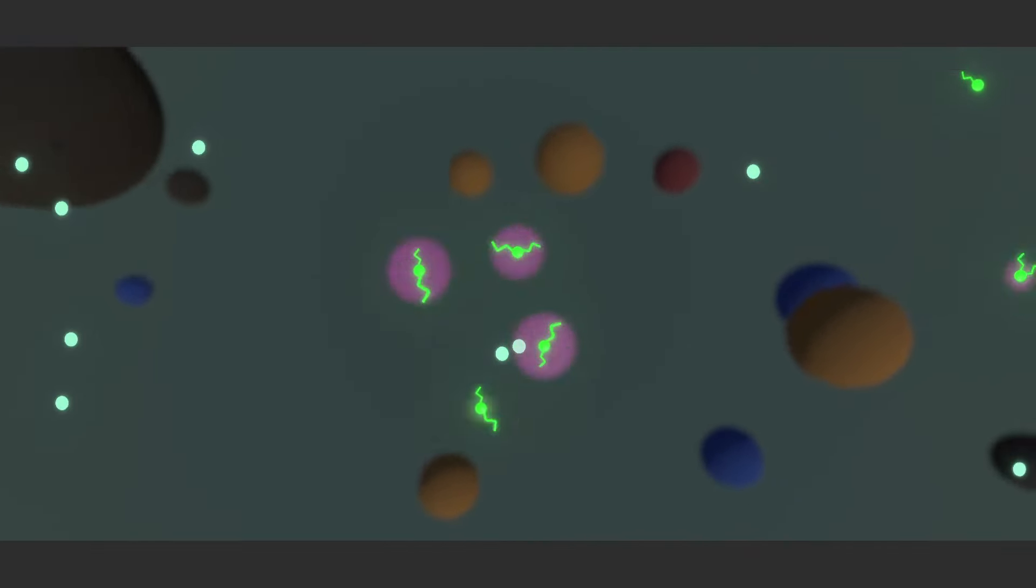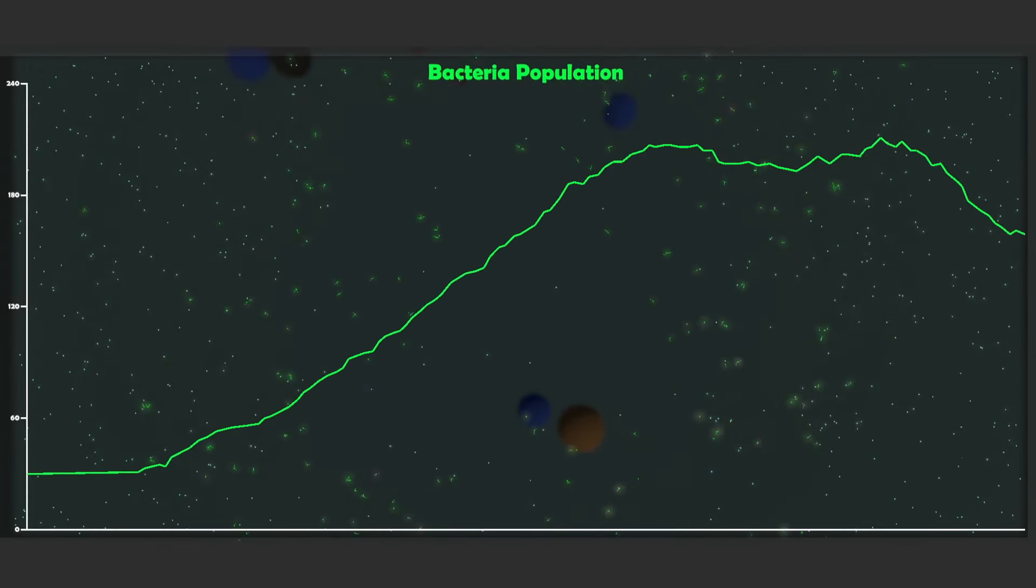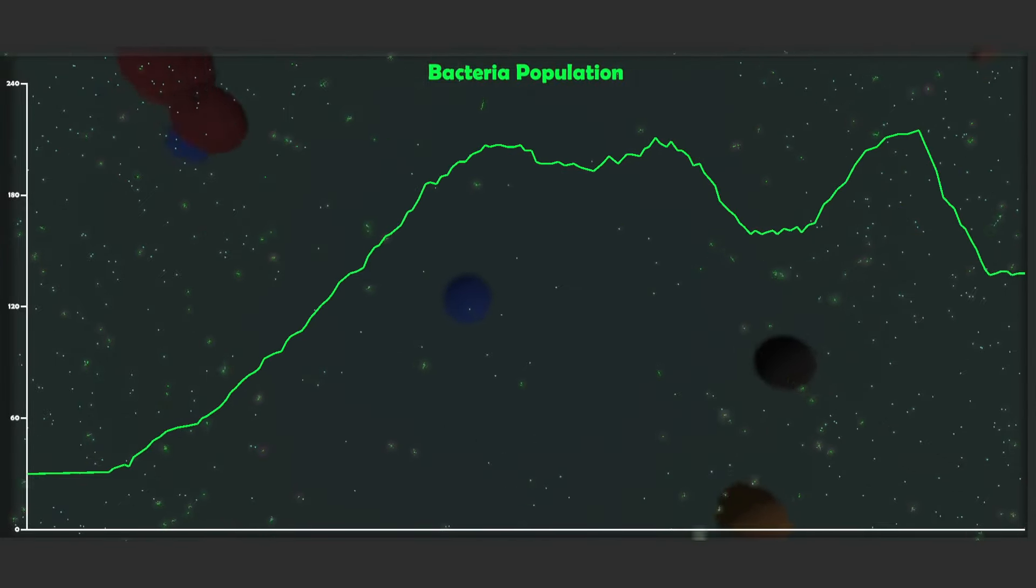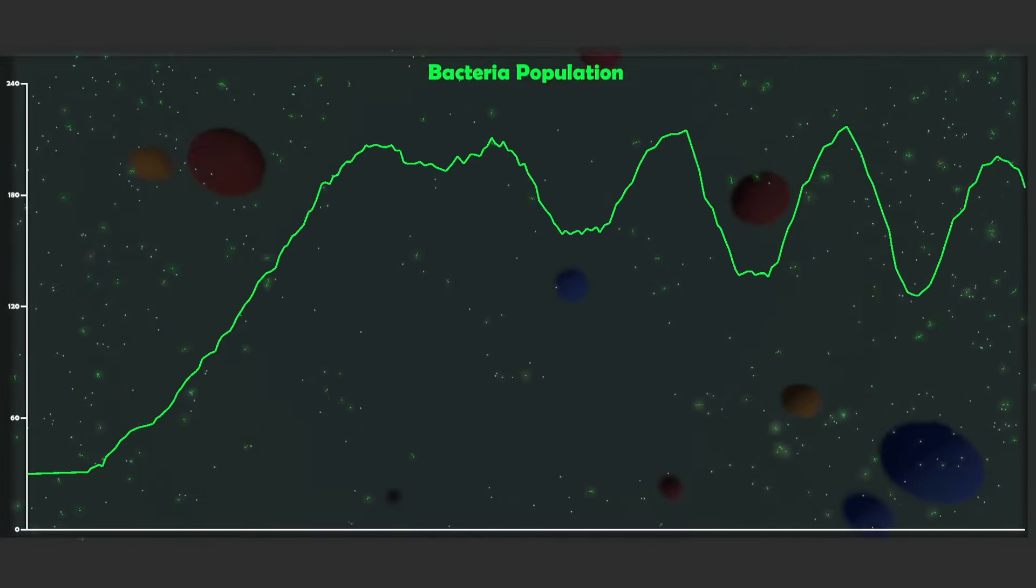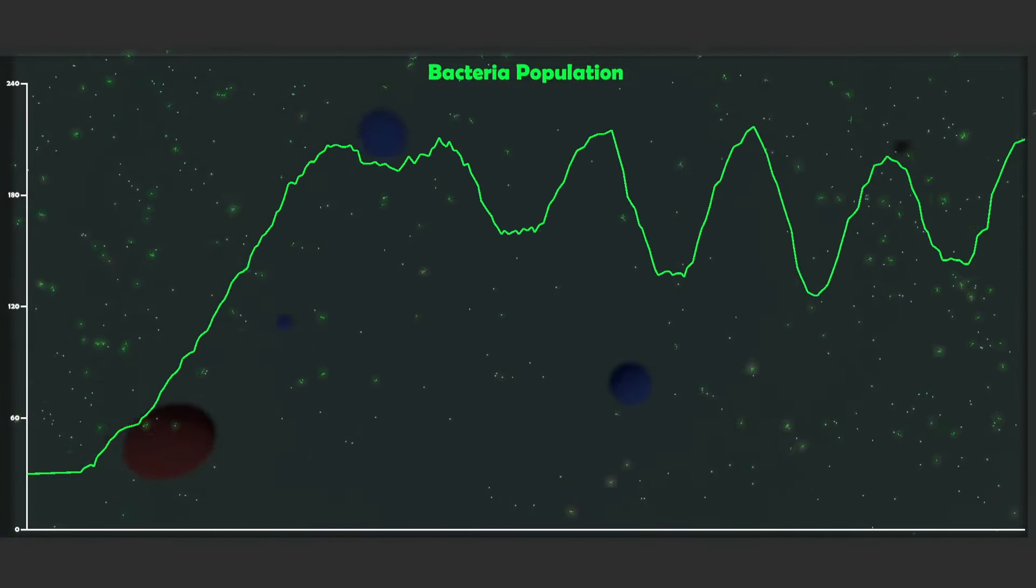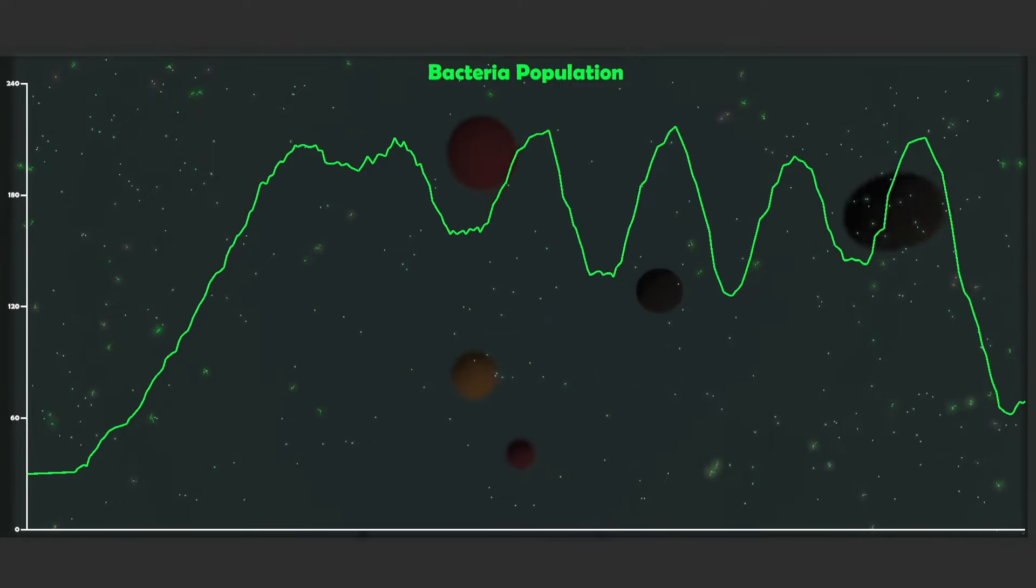So here's a starter run with no viruses. Here you can see that the population first starts growing exponentially, but then there's dips and other raises because they multiply a lot. There won't be enough food to go around, so some of them will starve. But then the cycle will continue since new food is constantly coming in.